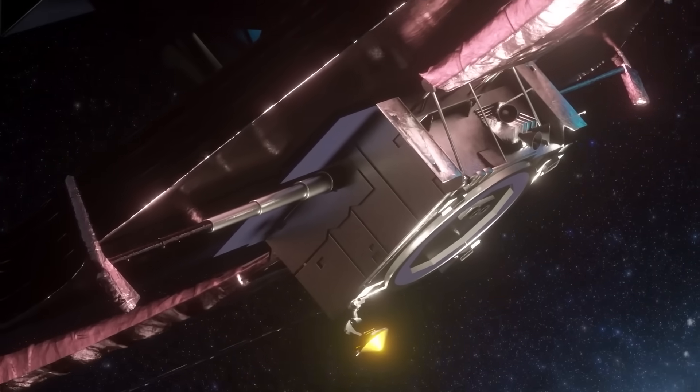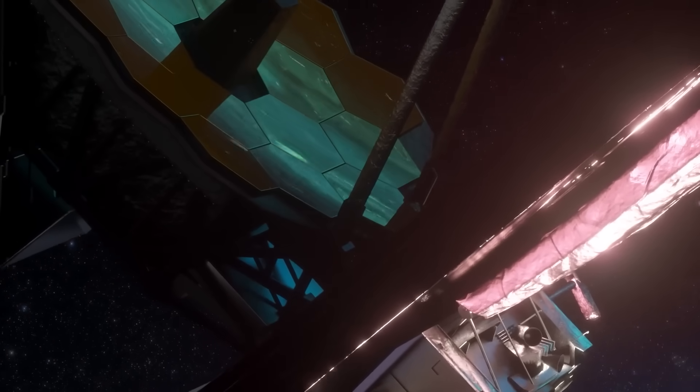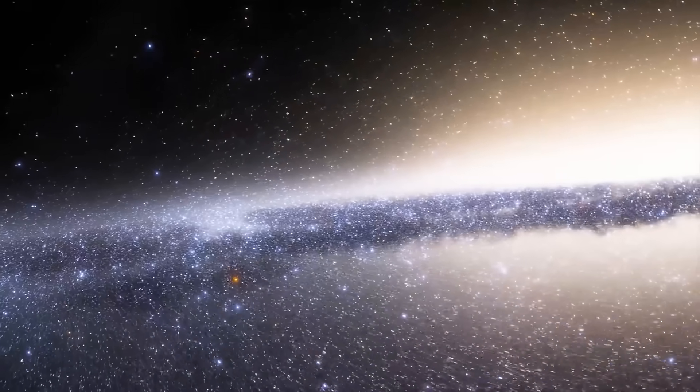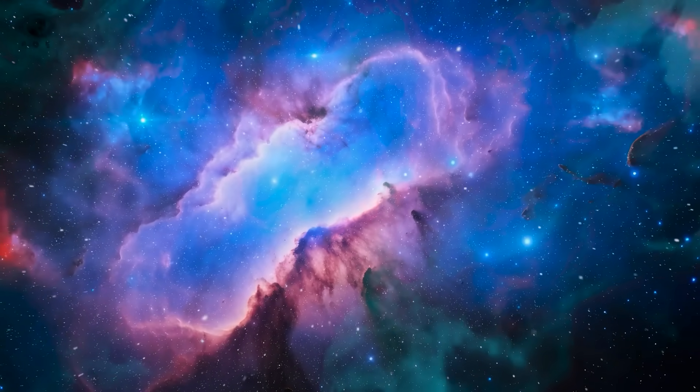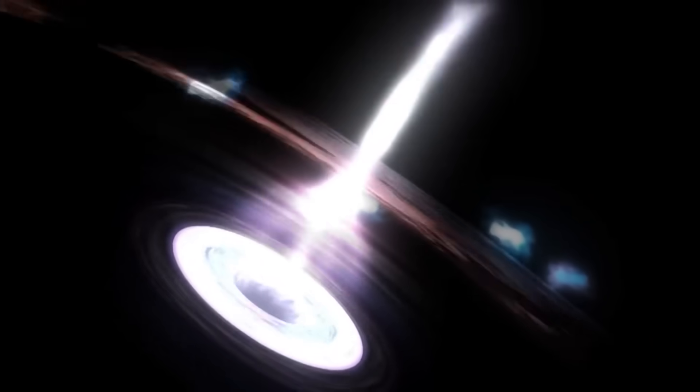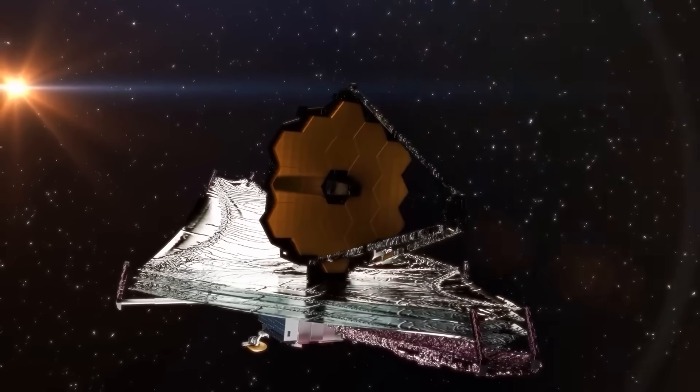The James Webb Space Telescope was built to reveal the past, to peel back the layers of time and show us what the universe looked like billions of years ago. But in doing so, it may have shown us something even deeper, that we are not just observers of the cosmos. We are part of a system far older, more precise, and more deliberate than we ever imagined. Galaxies that shouldn't exist, planets that defy gravity, signals without sources, structures that mirror intelligence. This isn't random noise, this isn't just science fiction flirting with curiosity. These are data points, real, measurable, undeniable, that challenge the very fabric of our understanding.